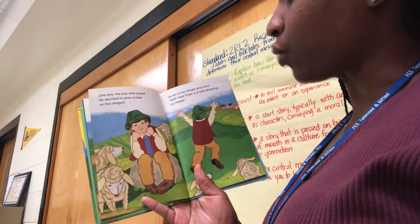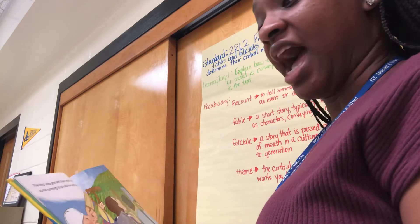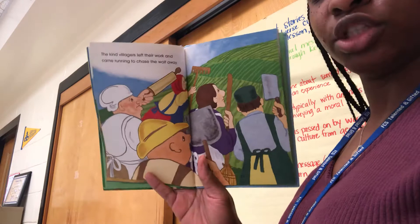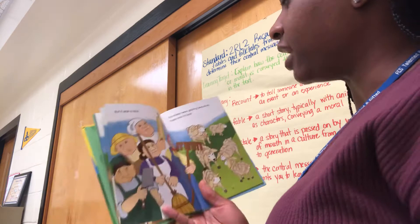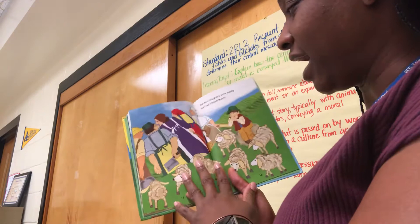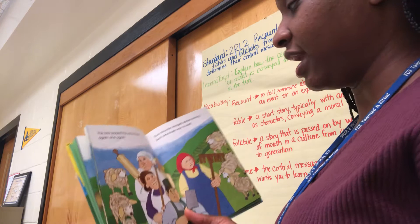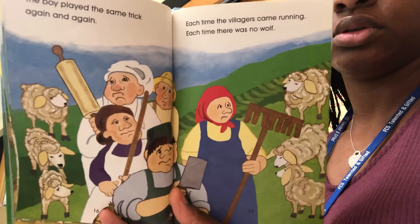He ran to the village and cried, 'Wolf! Help! There's a wolf attacking my sheep!' The kind villagers left their work and came running to chase the wolf away — they were going to try to help him. But it was a trick. The sheep were grazing peacefully; there was no wolf. The boy laughed at how easily he had fooled them. The boy played the same trick again and again. Each time the villagers came running, and each time there was no wolf.